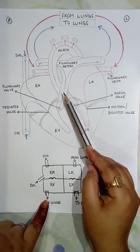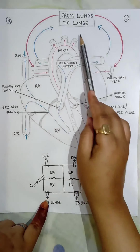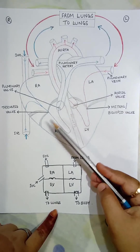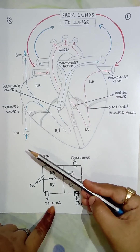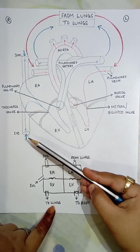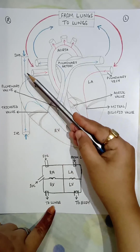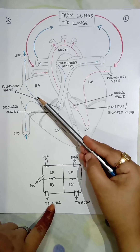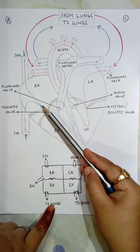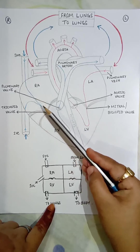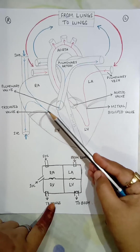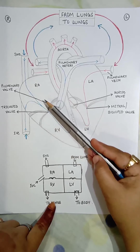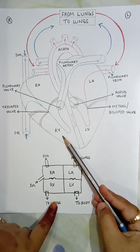Now for the circulation of the heart, we also need to consider the lungs. Deoxygenated blood from the lower part of the body comes through the inferior vena cava to the right atrium, and deoxygenated blood from the upper part comes through the superior vena cava to the right atrium. When the right atrium contracts, the tricuspid valve opens and blood flows into the right ventricle.